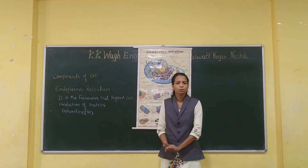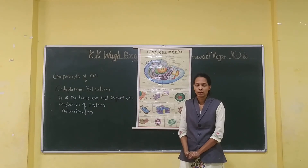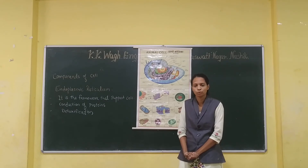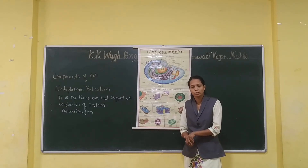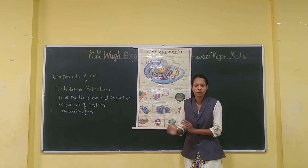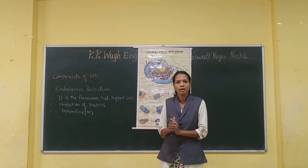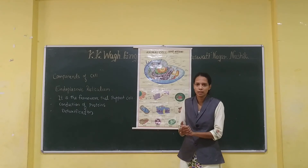Endoplasmic reticulum has two types: smooth endoplasmic reticulum and rough endoplasmic reticulum. Smooth endoplasmic reticulum does not contain ribosomes. On the rough endoplasmic reticulum, ribosomes are attached to it — that is why it is called rough endoplasmic reticulum, or in short, RER. Smooth endoplasmic reticulum is called SER.